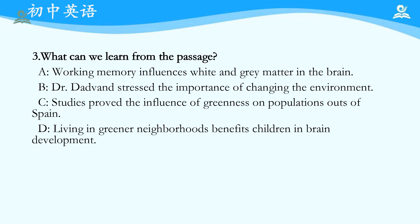第三题：What can we learn from the passage? A选项说Working memory influences white and grey matter in the brain——working memory其实是green space影响所导致的结果，是因变量的角色，而非自变量，因果颠倒，所以不对。B选项说stress the importance of changing the environment——文章的确提到了绿色空间的重要性，但不能过度推断出changing the environment。C选项说out of Spain，与文本信息冲突，研究participants come from Spain。